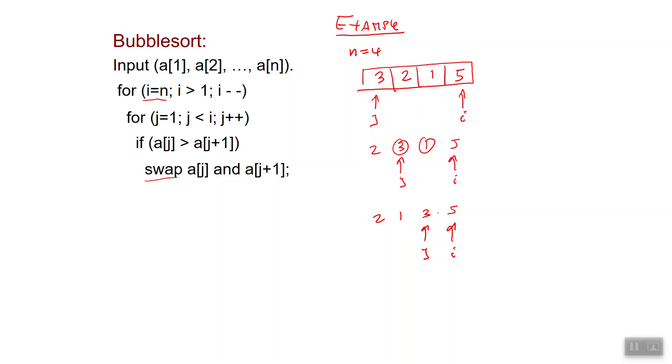At this point 3 is less than 5, so I do not perform any other swap. I'm done with the one iteration of the inner loop. Now I decrease i, so I go to 2, 1, 3, 5, where now i points to this last 3.